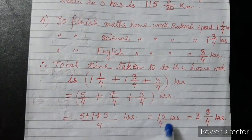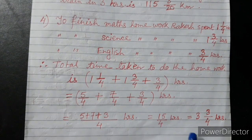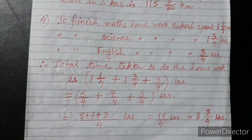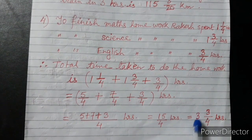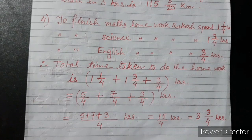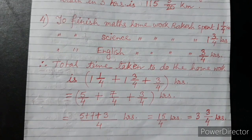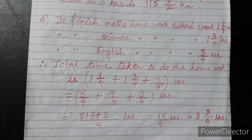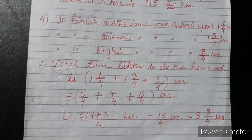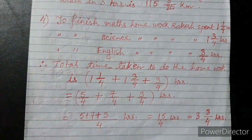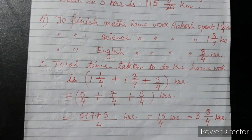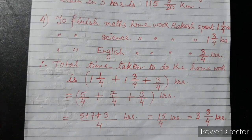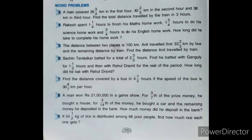Phir se mix fraction kar do, divide karke, toh aega 3 and 3/4 hours. So, total time taken to do the homework is 3 and 3/4 hours. Okay? Now sum number 5.